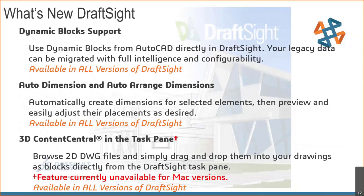DraftSite also supports dynamic blocks — you can edit and control those blocks inside DraftSite. Dynamic blocks are like a configuration of parts: a family of blocks that are similar but different sizes. Think of a door frame with different widths and thicknesses, all under one dynamic block — you pick which one you want and transition between them. That's available in all versions. Same with auto dimension and auto arrange dimensions, very familiar to SOLIDWORKS users. And there's the 3D Content Central task pane accessible right from DraftSite.